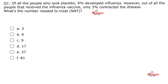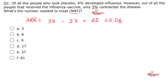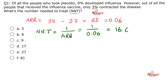Case number one — please pause and try to solve this yourself. Of all the people that took placebo, 9% developed influenza — that's the bigger number. Only 3% contracted the disease out of those who were vaccinated — that's the smaller number. This is a reduction in risk thanks to vaccination, so we call this absolute risk reduction. 9% minus 3% equals 6% or 0.06. If you want the number needed to treat, flip the absolute risk reduction: 1 over 0.06 equals 16.67, which is about 17. The correct answer is choice D.